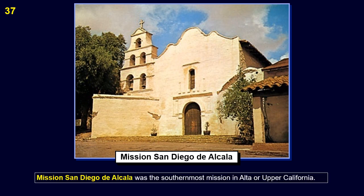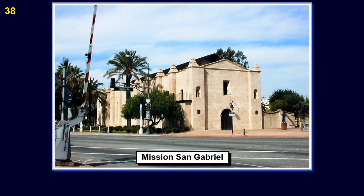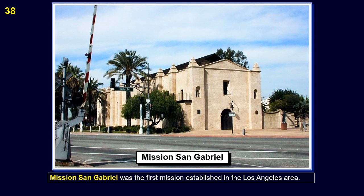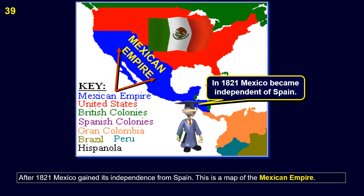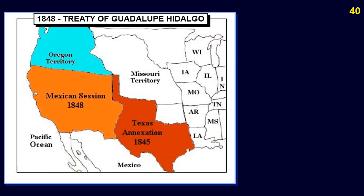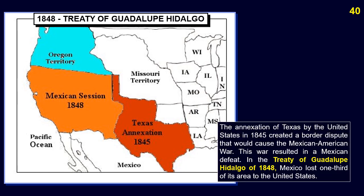Today the route of El Camino Real is commemorated by signs and replicas of Mission Bells. Mission San Diego de Alcala was the southernmost mission in Alta or Upper California. Mission San Gabriel was the first mission established in the Los Angeles area. After 1821 Mexico gained its independence from Spain. The annexation of Texas by the United States in 1845 created a border dispute that caused the Mexican-American War. This war resulted in a Mexican defeat in the Treaty of Guadalupe Hidalgo of 1848, and Mexico lost one-third of its area to the United States.